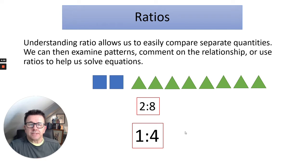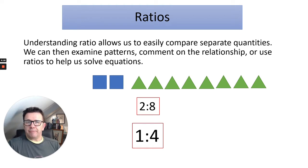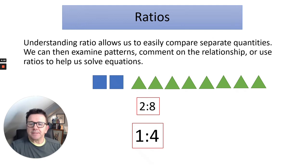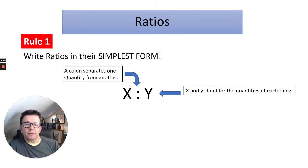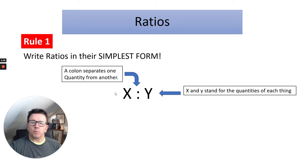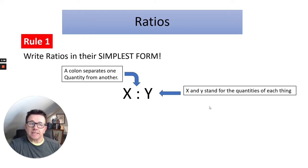So there are certain rules. I'm going to teach you two rules about ratios to look out for in exam questions, then I'm going to go through some exam questions with you. Rule one: write a ratio in the simplest form. You can see X colon Y — a colon separates one quantity from another, and X and Y stand for the quantities of each thing.